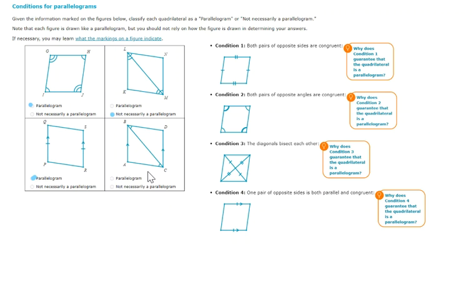And then our last figure, we have two sides showing parallel, and then we have two opposite angles showing congruent, but that doesn't give us enough information to show that one of these four conditions is met. So again, I'm going to say not necessarily a parallelogram.